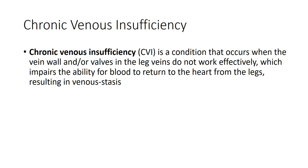Next we'll dive into chronic venous insufficiency. CVI is a condition that occurs when the vein wall or valves in the legs don't work effectively, which impairs our ability for blood to return from the legs to the heart, resulting in venous stasis. When we have venous stasis, we change oncotic pressures, and we can end up developing edema and swelling along with related complications.